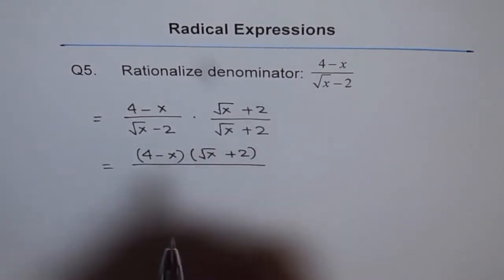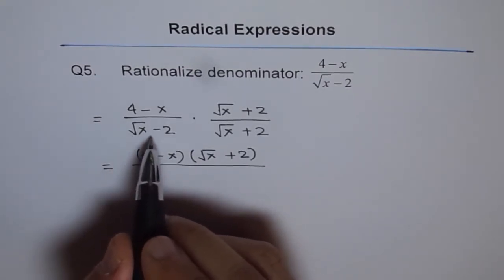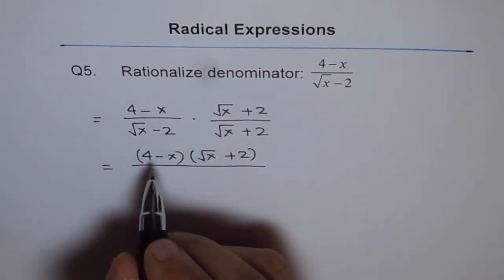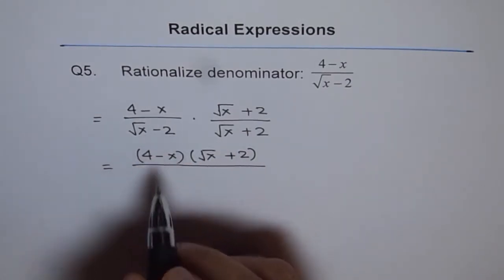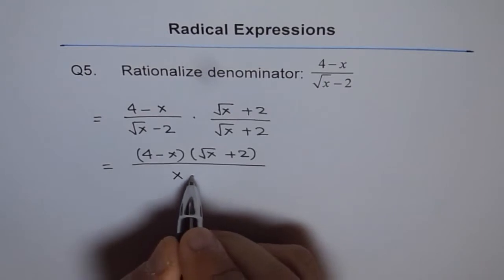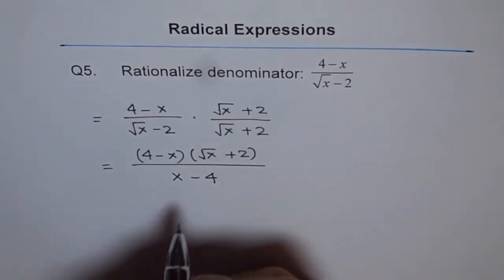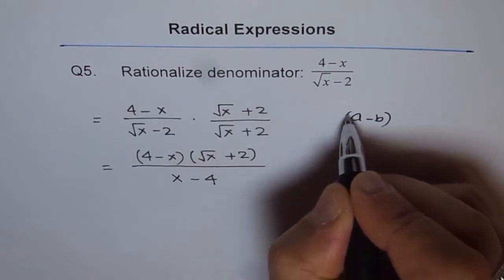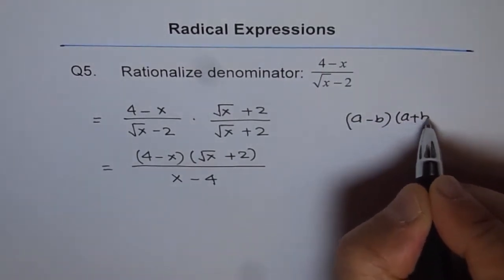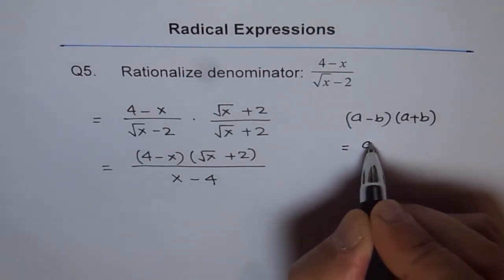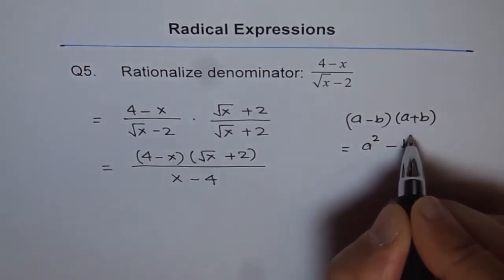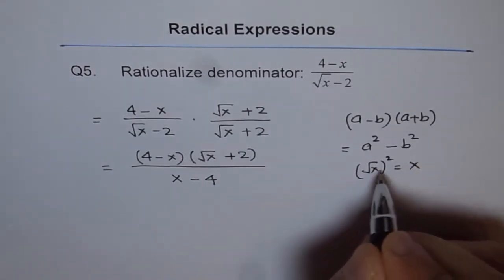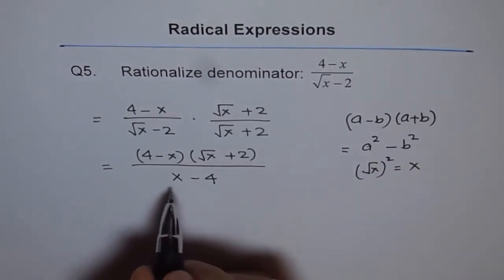And in the denominator, we get square root x minus 2 times square root x plus 2, which will be square root x square minus 2 square. That is x minus 4. So this is the difference of squares: A minus b times a plus b equals a square minus b square. Square of square root x is x, that is why we get x here.